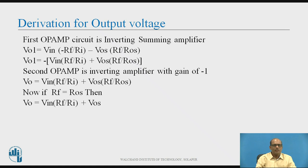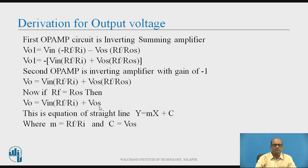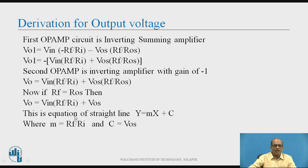Now, if Rf is equal to Ros, then V-ob becomes equal to V-in plus V-os. Therefore, this is an equation of a straight line Y = MX + C, where M is the slope of the straight line, M = Rf/Ri, and C = V-os. C is the intercept on the Y-axis, where Y is V-o and X is V-in.